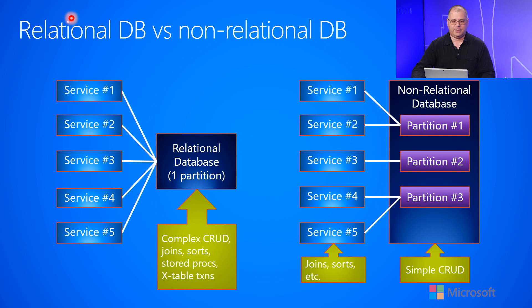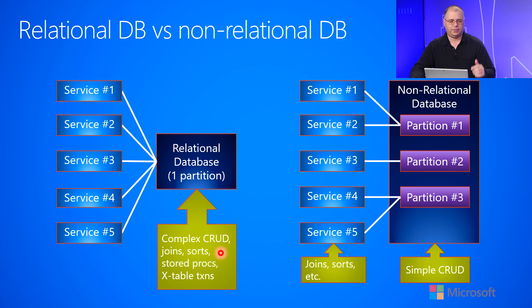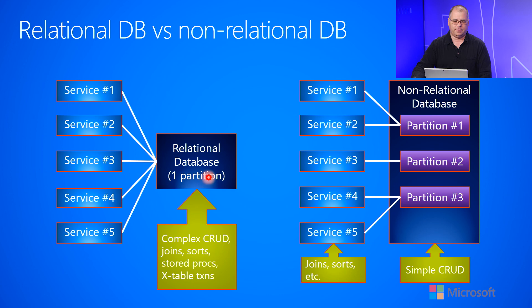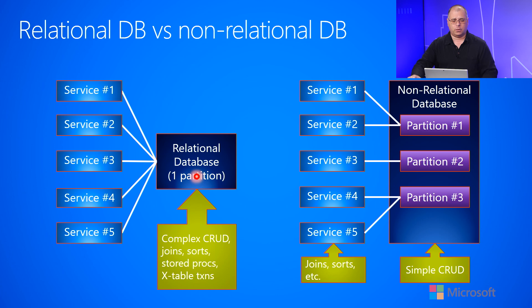On the left-hand side is what a typical relational database looks like. It effectively has a single partition and is capable of performing very complex CRUD — create, read, update, and delete operations. It can also do joins, sorts, execute stored procedures, and support transactions that span across tables. It's a very comprehensive database that provides programmers a lot of really nice features. But when you have many stateless service instances talking to this single stateful backend, as you scale up, they're all still talking to the same backend, making it a bottleneck — more requests, more data, potentially affecting the performance of all instances.